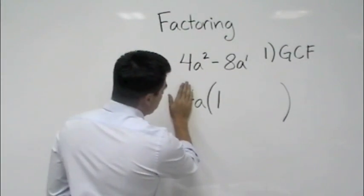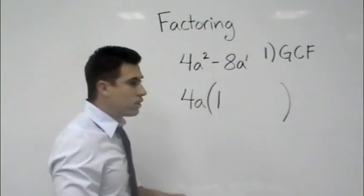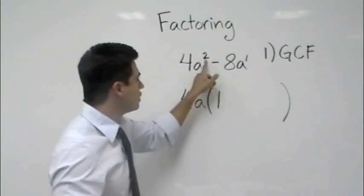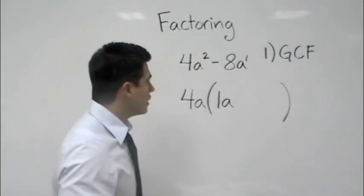Now let's look at the variable. a times what gives me a²? Well, we already have 1a and we need 2a's, so it would be 1a. Good.